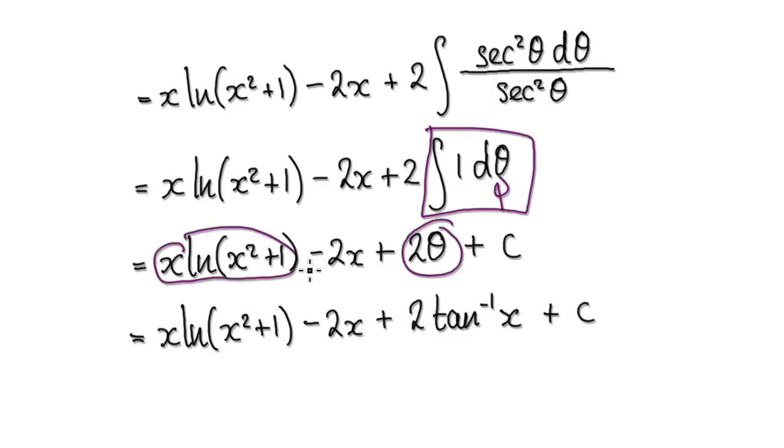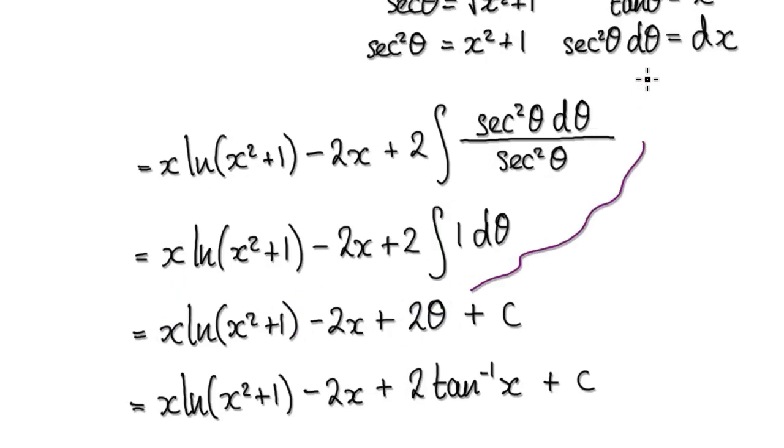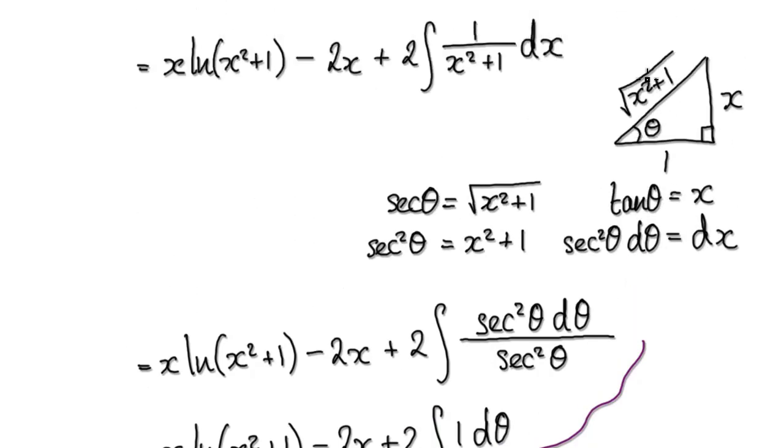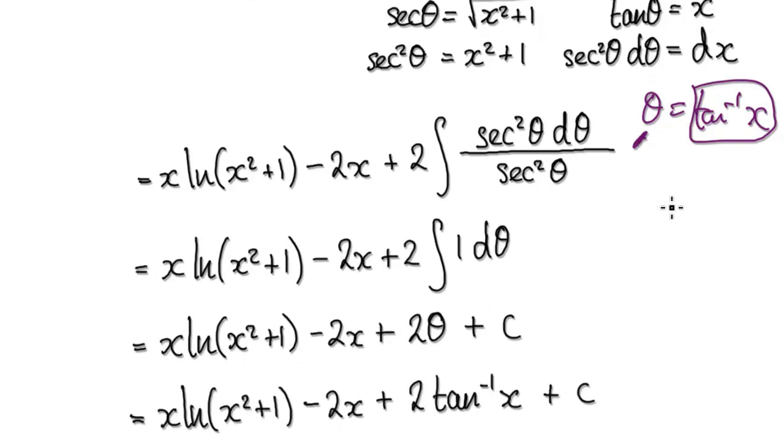So all these are in terms of x, but you've got your theta here. But we don't want the answer in terms of theta. So we would go back to our original diagram. Remember the answer is in theta. Earlier, x is tan theta. So if you want theta on its own, then inverse tan both sides. So theta equals inverse tan of x. We can put this back into the theta here. That would then give us this. So our final answer would be this.